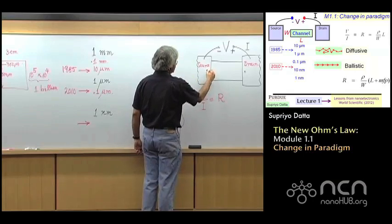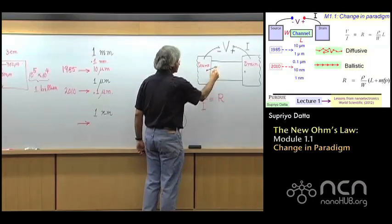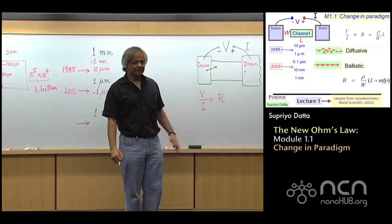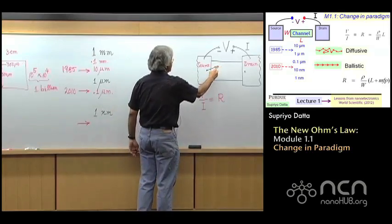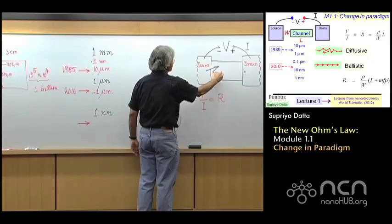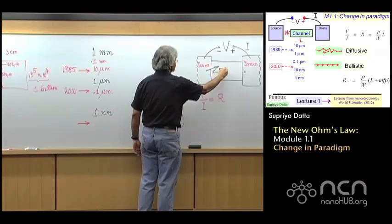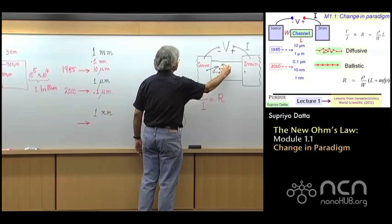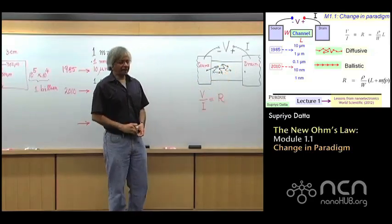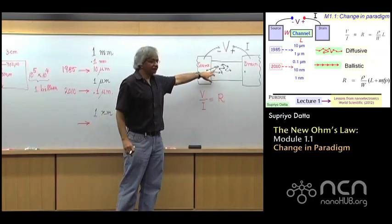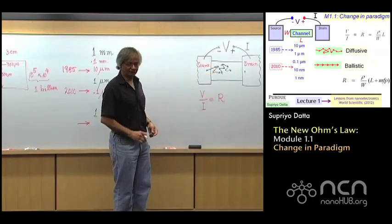That is, an electron starts out some place, heads out in some direction, hits something, gets turned around a little, and then hits something else, turns around, hits something else, turns around, and so on. By contrast, that's what things looked like in 1985.